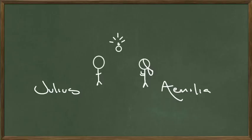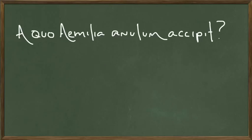Let's set up this scene. So we have Julius, he's the father of the family, and he's giving Amelia a ring. Here's a ring magically floating in the air. And the question is, A Quo Amelia Anilum Accipit. It means, from whom does Amelia accept a ring?